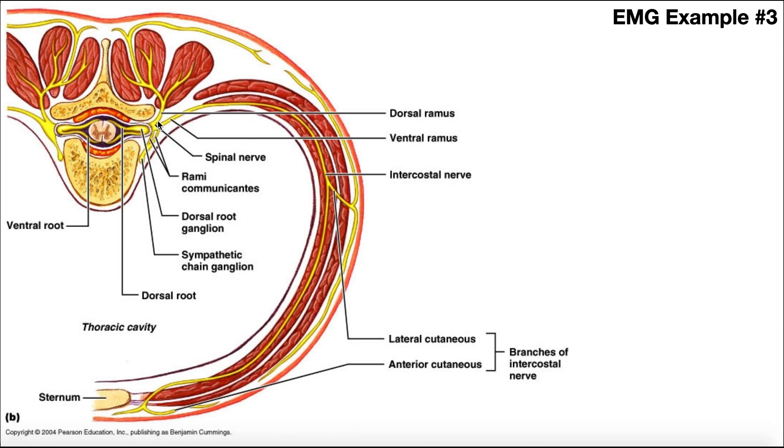And then we also get the dorsal ramus, which immediately goes back posteriorly, and it innervates the various deep muscles of the back, like the multifidus and the erector spinae.